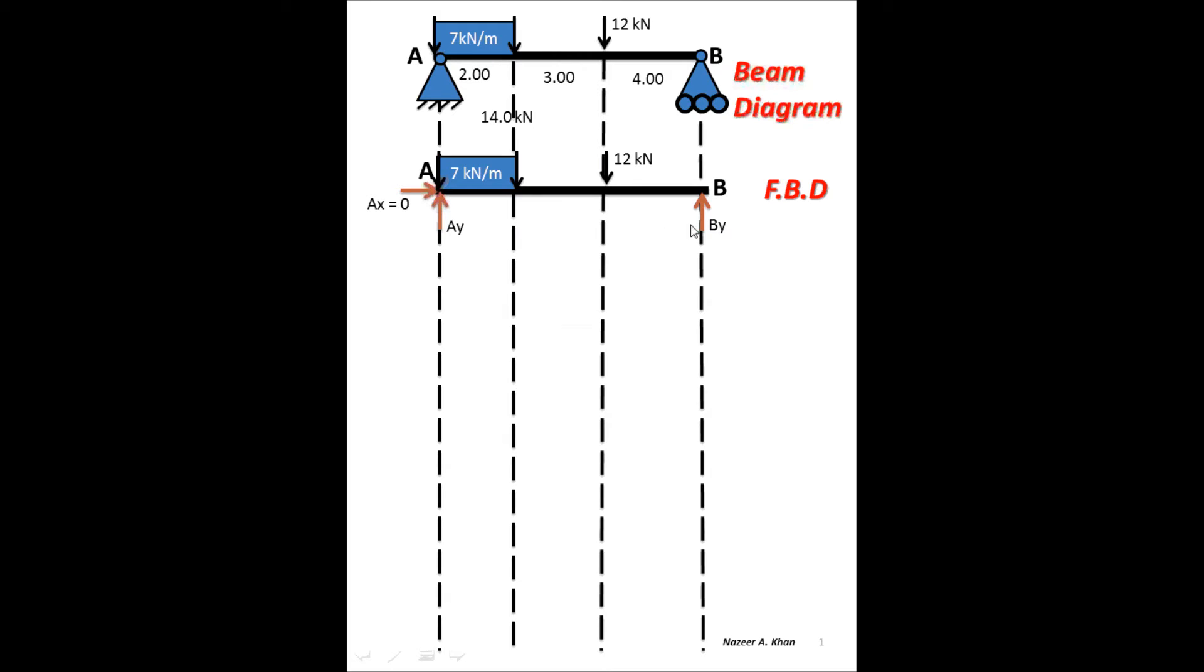I have my dimensions and all of my magnitudes that I need. If you notice for AX, which is this reactant force right there, I already have a magnitude of zero. The reason for this is that we don't have any horizontal component to cause a reaction from this particular support. If we had an angular force, then the component would cause a reaction and we would have a magnitude other than zero.